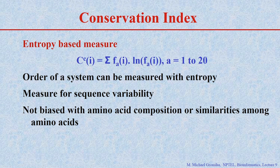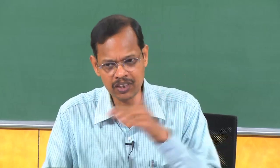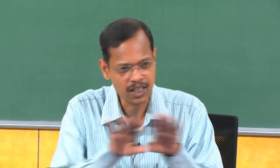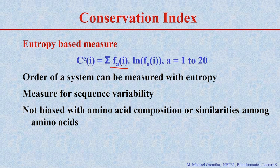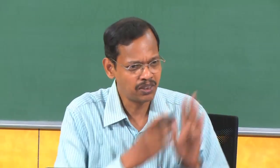First we do the entropy-based score. If a specific position is occupied by a single amino acid, Fe(i) equals 1. If it is occupied by different amino acid residues, Fe(i) will differ depending upon how many times each amino acid residue occurs at that position. If they are randomly distributed, the frequency will be 0.05. We multiply the frequency with the logarithm of that frequency to get the conservation score based on the entropy-based method. This is not biased with amino acid composition or similarities among amino acids.